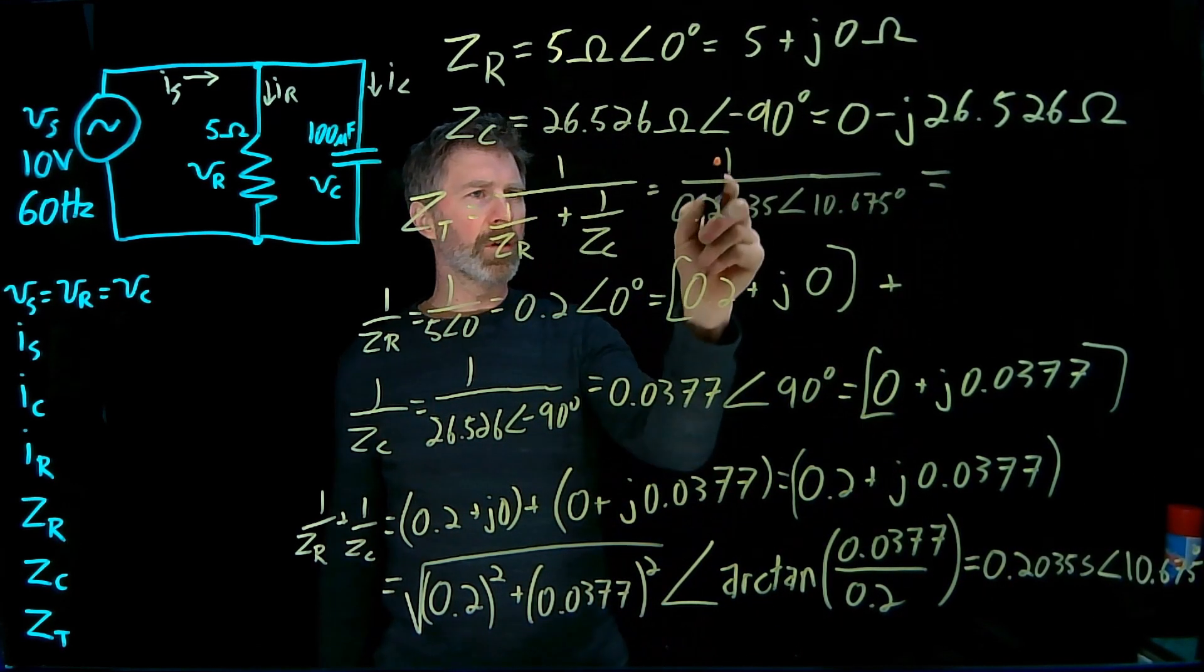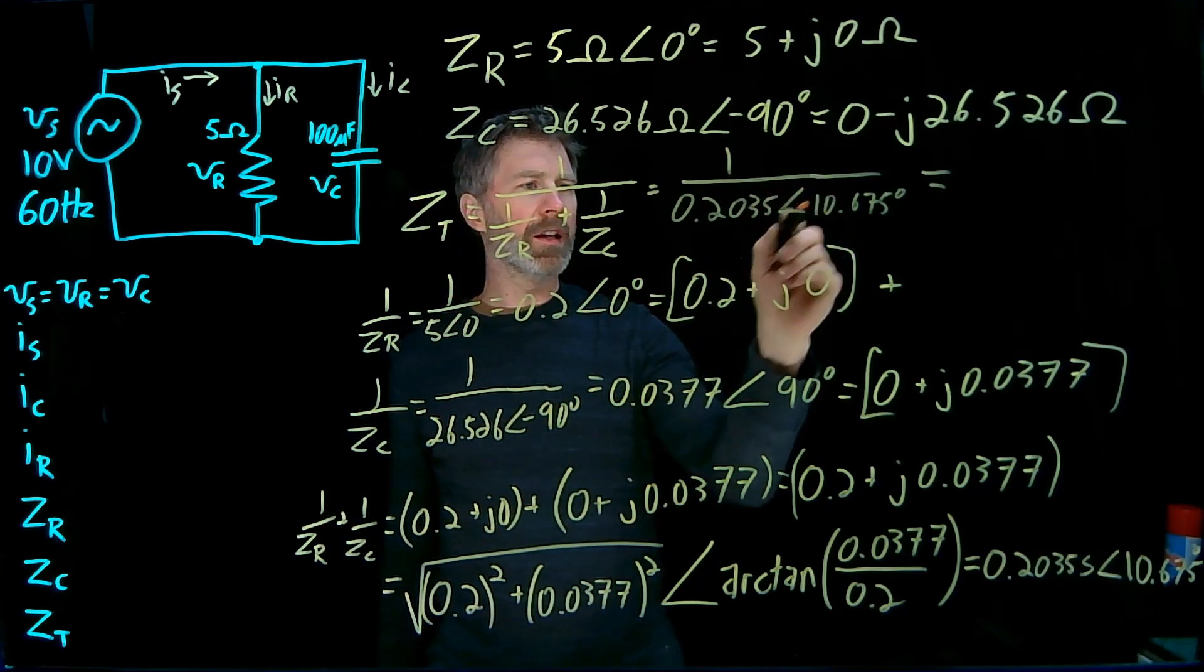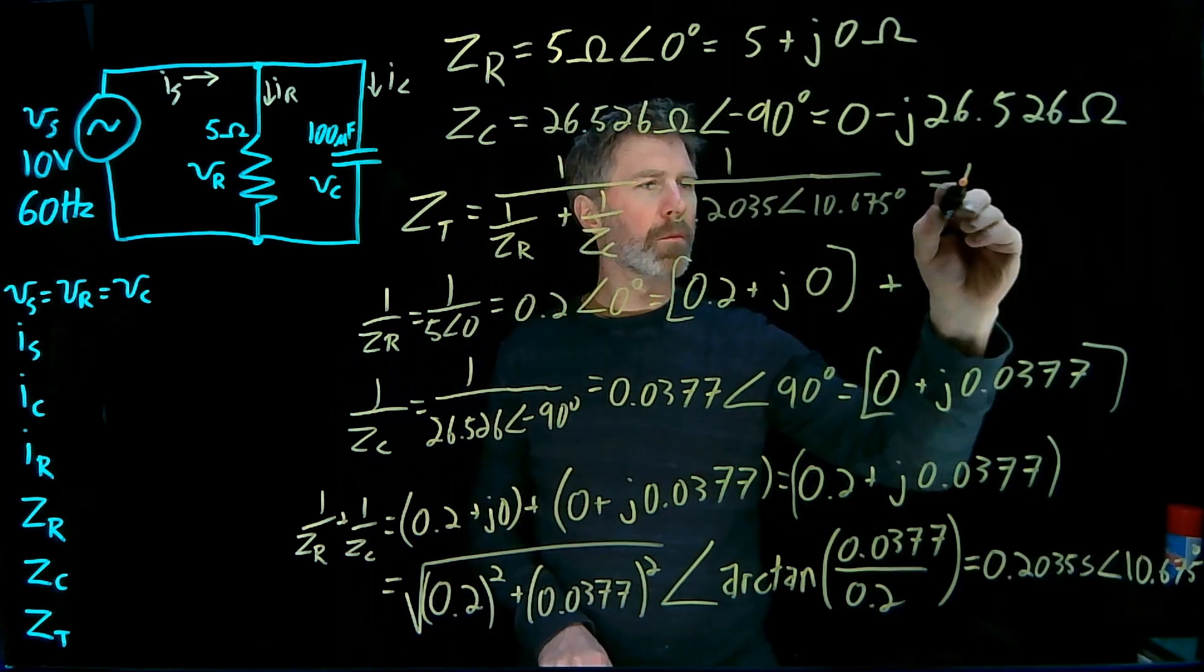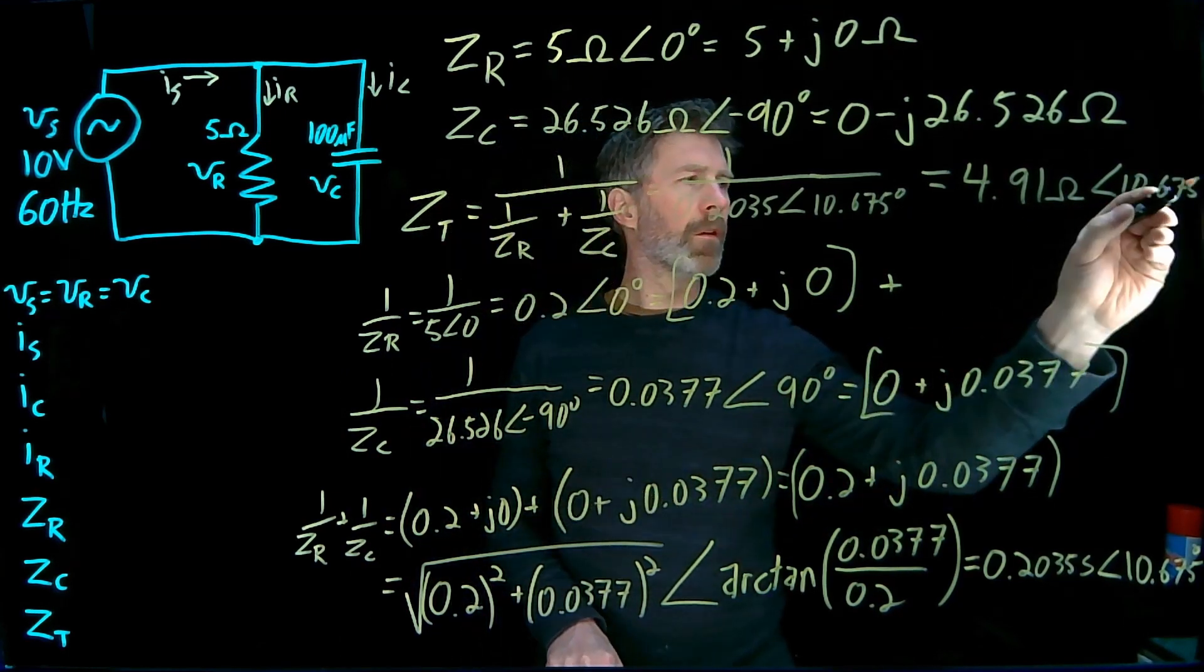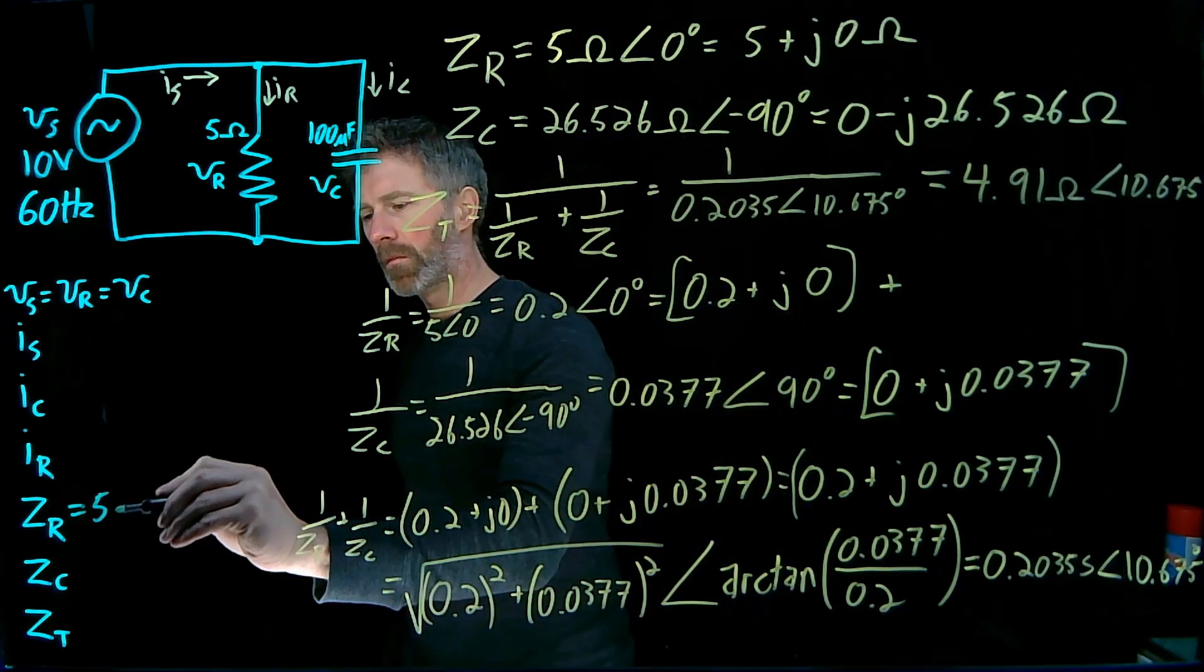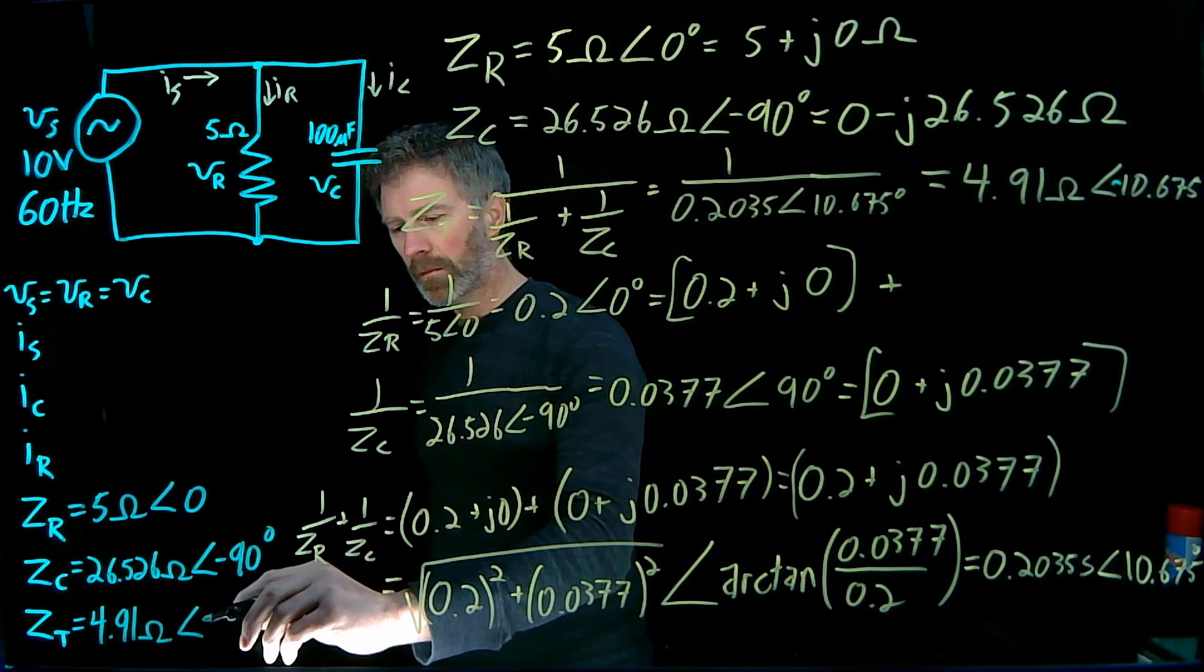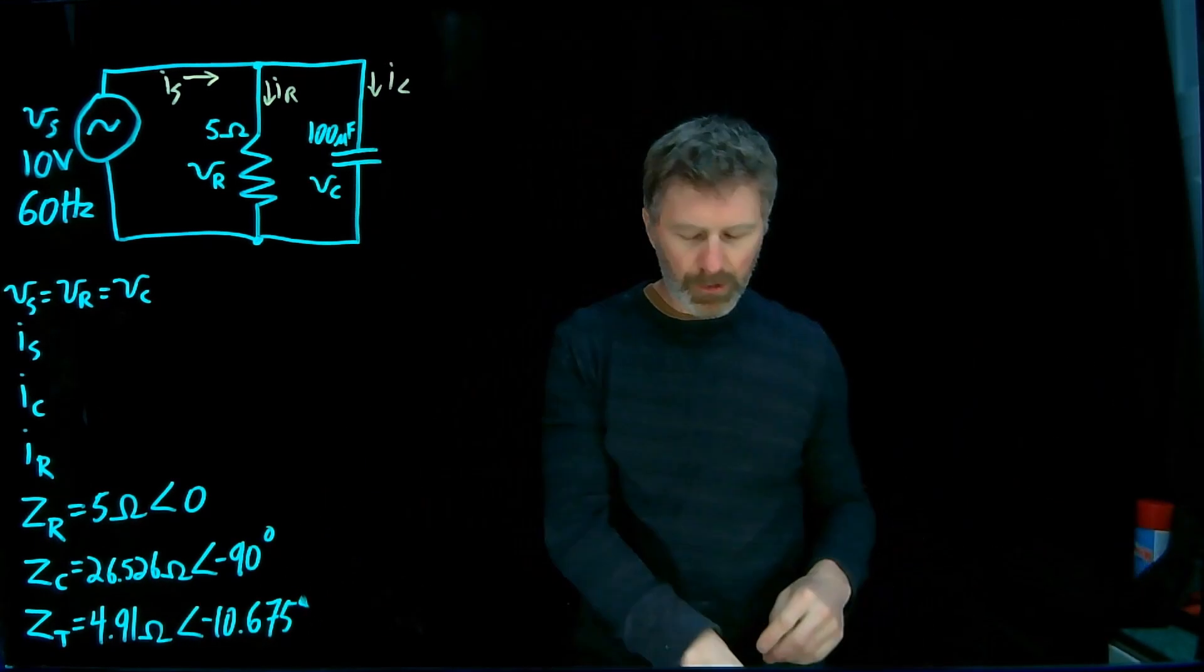So to do the inverse, it'll be 1/0.2035, and then -10.675 degrees. And now I'm going to move all of these values over to my little table here. That should be negative, shouldn't it? Okay.